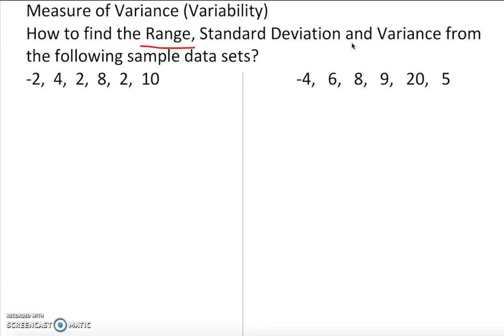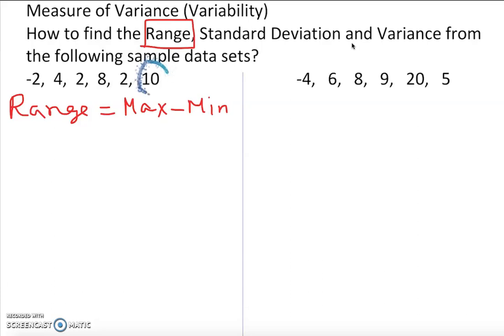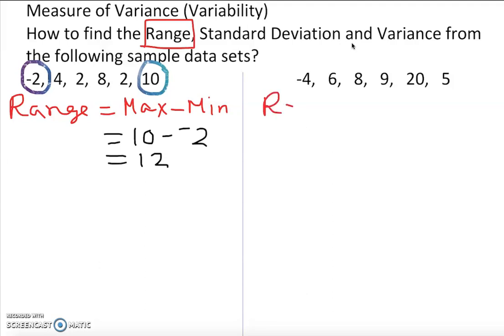Let's start with the easy one first: finding the range. Range is equal to maximum minus minimum. We look at the data and identify the maximum and minimum numbers. So we plug in: 10 minus negative 2, and that gives us 12.